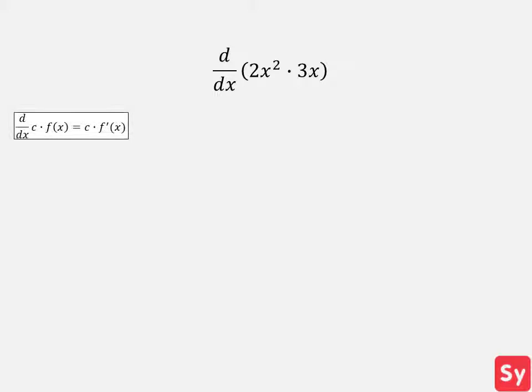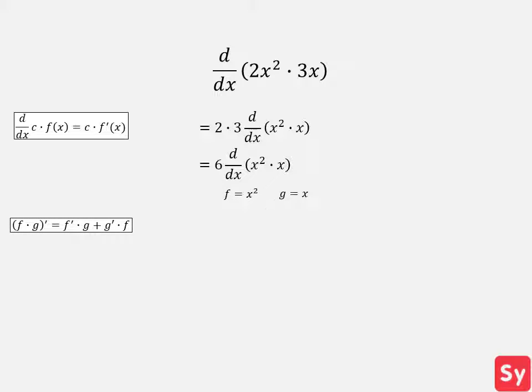First we can use the multiplication by a constant rule and pull out the 2 and 3 from the derivative. This simplifies to 6 times the derivative of x squared times x. Next we see that we have two functions multiplied together, f and g, where f is equal to x squared and g is equal to x. So we can use the product rule.